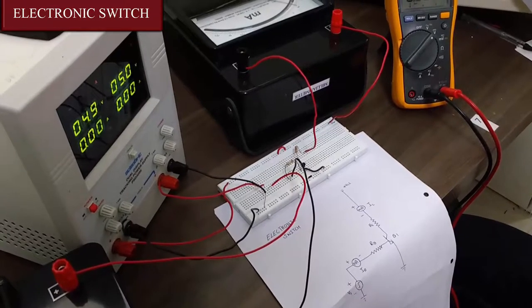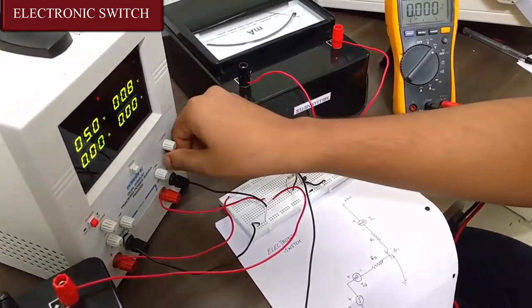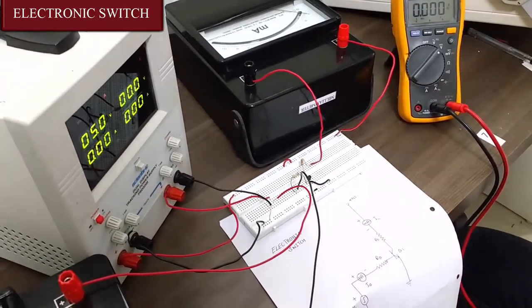So that observation was when our VS voltage was 5. Now we will make our voltage 0. So now VS is 0.